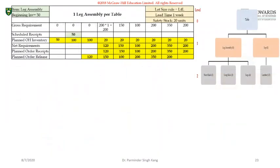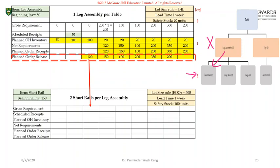As we know, in the previous two videos we completed level one planning for the MRP. Now we are at level two. At level two, the demand will be determined based upon the components or the sub-assemblies. The demand of sub-assemblies or components is driven based upon the planned order release. For example, for the leg assembly we knew there's a requirement of 120 leg assemblies on week four.